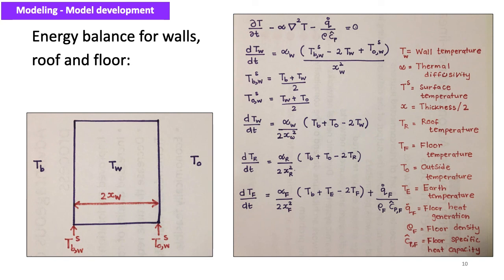The symbols used in the envelope equations are: T_W is wall temperature; alpha is thermal diffusivity; T superscript S is the surface temperature; S is the thickness divided by 2; T_R is the roof temperature; T_F is the floor temperature; T_O is the outside temperature; T_E is the earth or ground temperature; Q_dot_F is the floor heat generation; rho_F is floor density; and ĈP_F is the floor specific heat capacity.